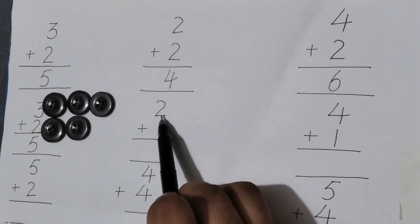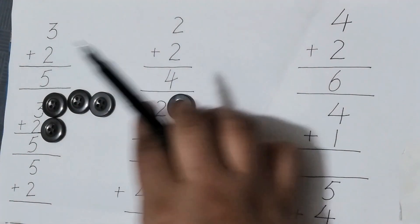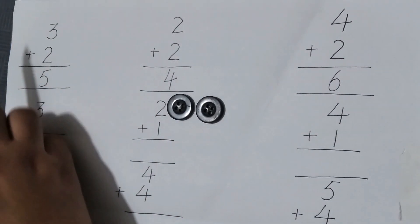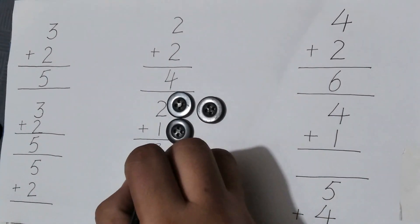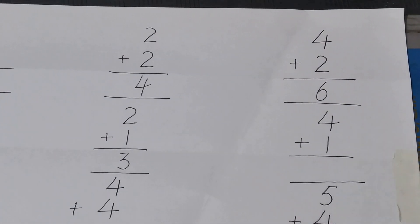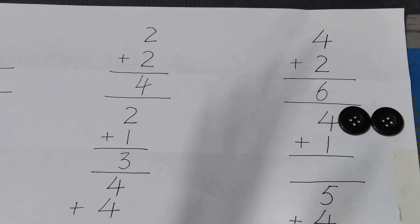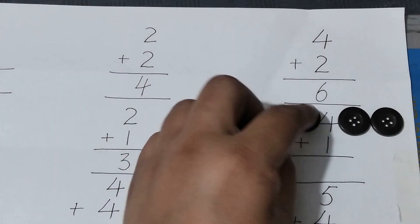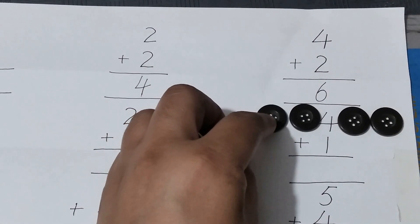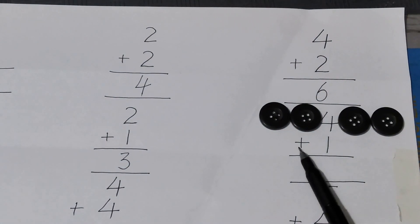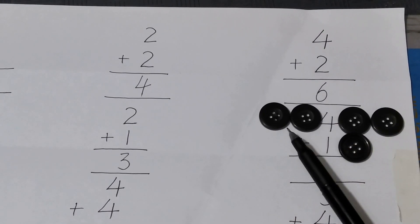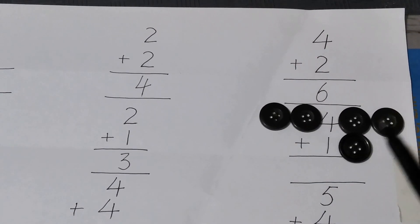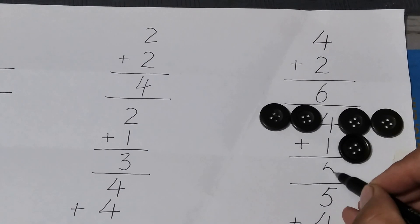Now two plus one — one, two, one. Two plus one: three. Four plus one — one, two, two, three, three and four. Four plus one: here is one button. Now I will count how many buttons there are: one, two, three, four, five. The answer is five.